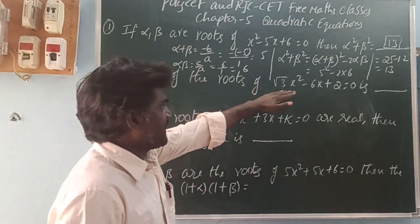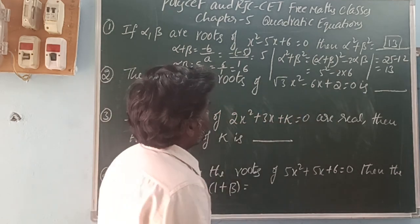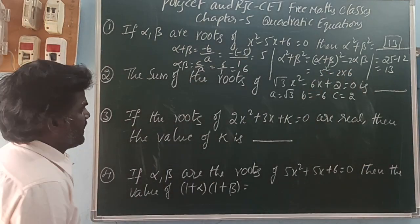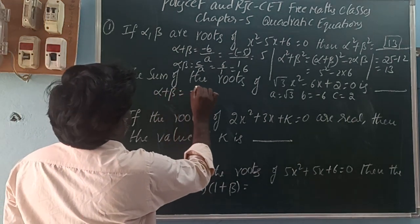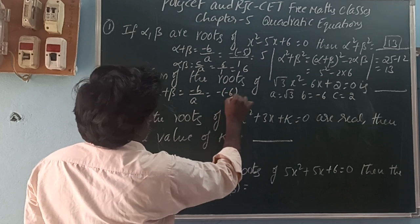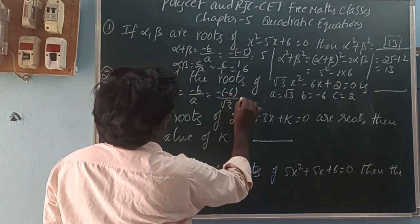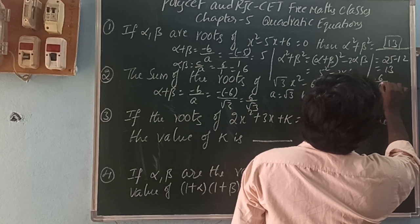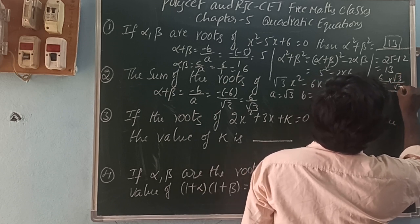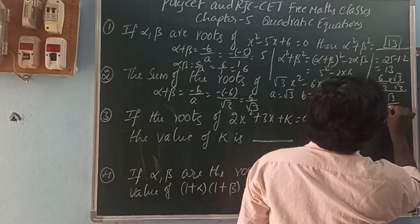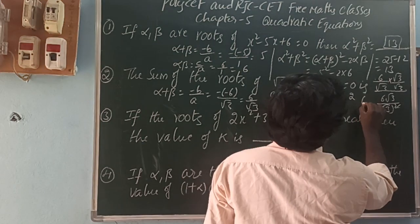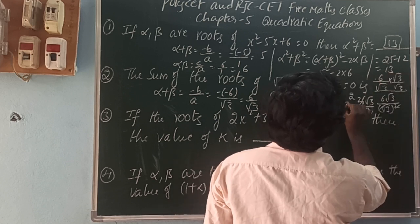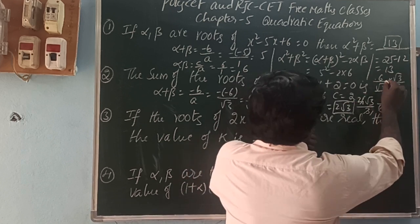Next, the sum of the roots of √3·x² - 6x + 2 = 0. Here a is √3, b is -6, c is 2. They ask for the sum of the zeros. That is alpha + beta = -b/a. That is minus of -6 over √3, so plus 6 by √3. Rationalizing by multiplying root 3 by root 3: that is 6√3 by (√3)², squares and root cancel, giving 6√3 by 3, which simplifies to 2√3. So the sum of the roots is 2√3.